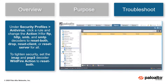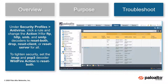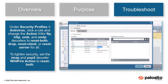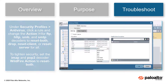Under Security Profiles Antivirus, click a rule and change the action for FTP, HTTP, SMB, and SMTP decoders to Reset Both, Drop, Reset Client, or Reset Server for All. To tighten security even more, set the IMAP and POP3 decoder Wildfire Action to Reset Both.